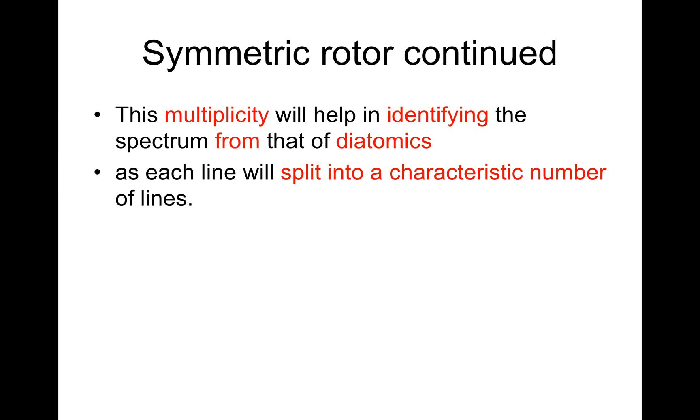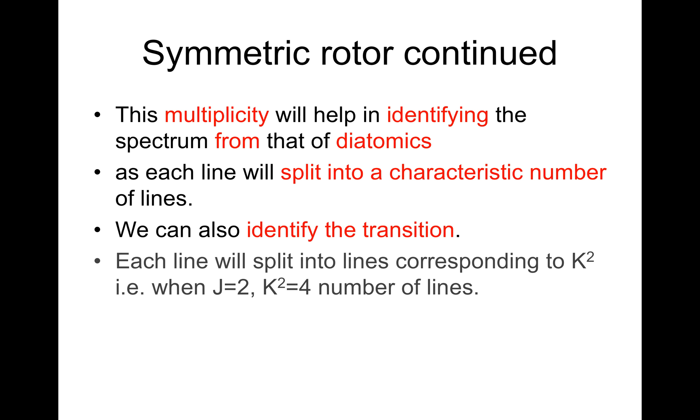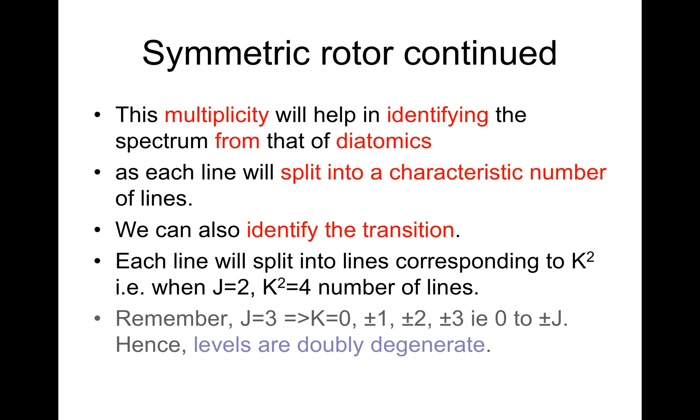This multiplicity will help in identifying the spectrum from that of diatomic molecules. As each line will split into a characteristic number of lines, we can now identify the transition. Each line will split into lines corresponding to K². When J equals 2, K² is 4, meaning 4 number of lines. Remember, J equals 3 implies that K equals 0, ±1, ±2, ±3, i.e. 0 to ±J. Hence, levels are doubly degenerate.